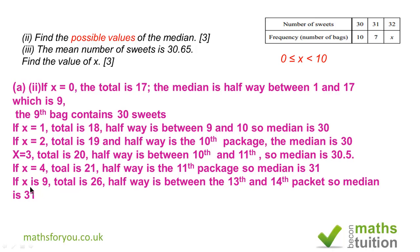Up to x is 9. If x is 9, we have got 26, so the half way package is between the 13th and the 14th package, and that's got 31 sweets. So the possible median values are 30, 30.5 and 31.